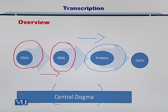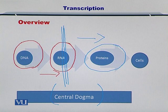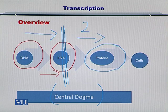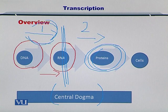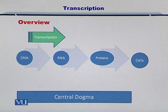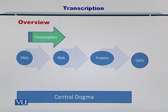The central dogma can then be broken into two components. The first part being the relaying of information from the DNA to the RNA, and the second part being the transfer of this information from the RNA to the proteins. In this module, we are going to focus on the first part, which is called transcription. This process is responsible for converting the DNA bases into the RNA bases.